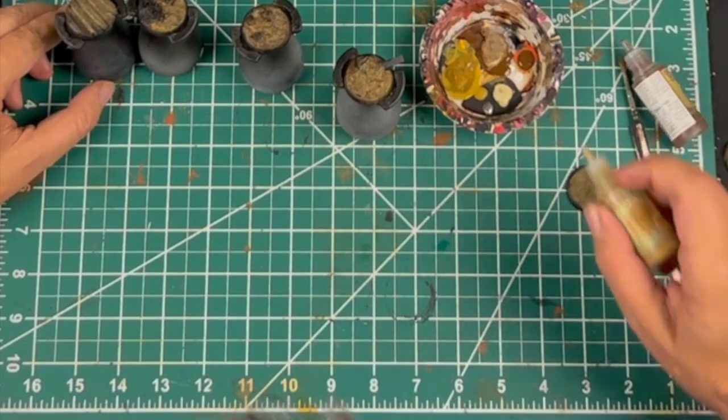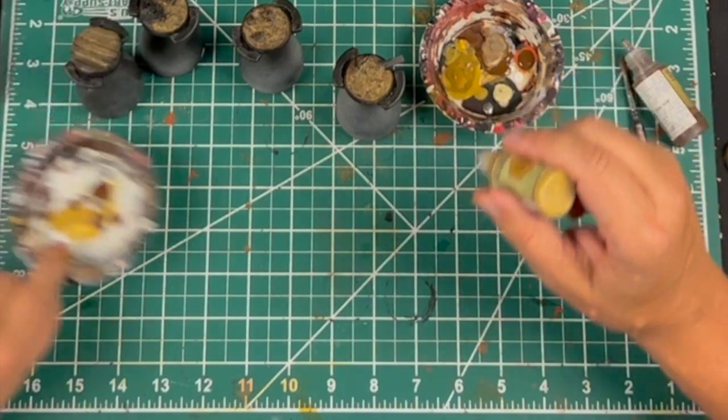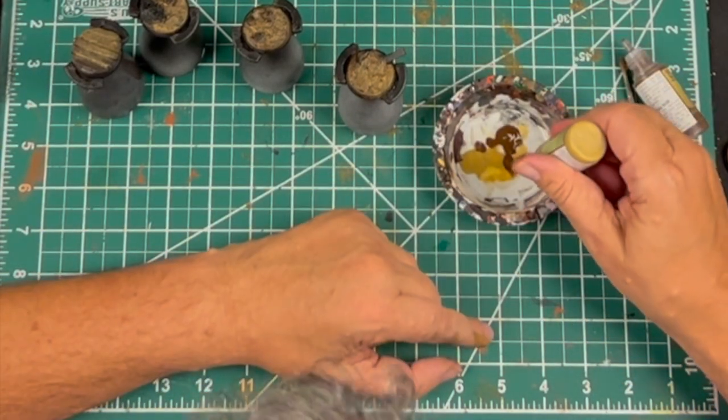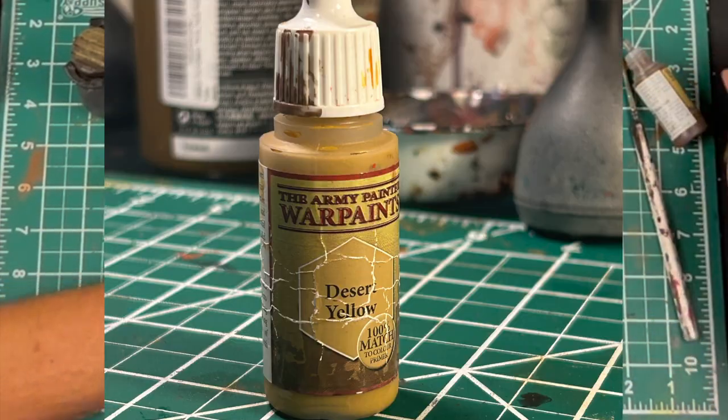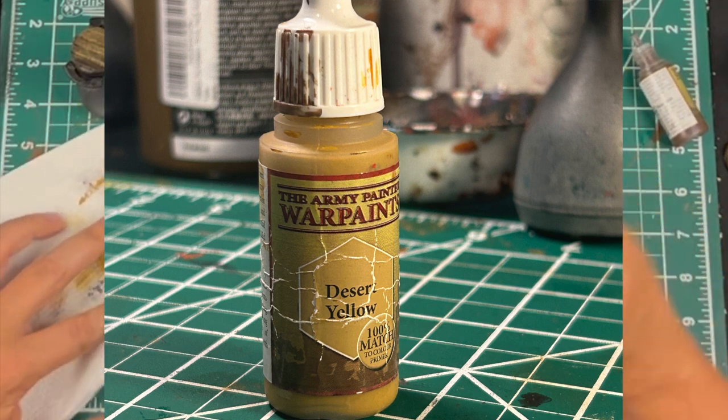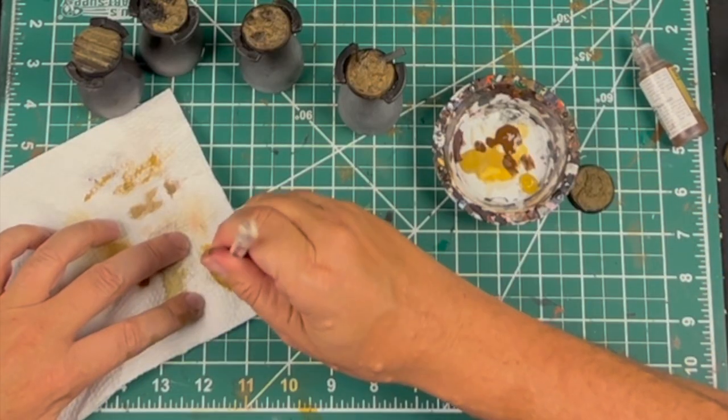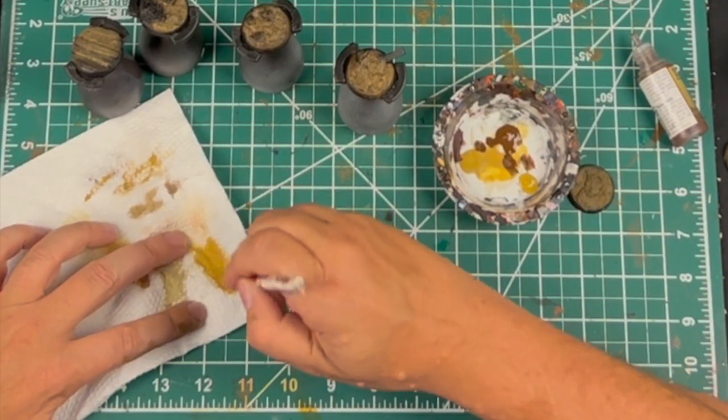We actually have to finish the ground. We're going to take some desert yellow and do a straight dry brush.